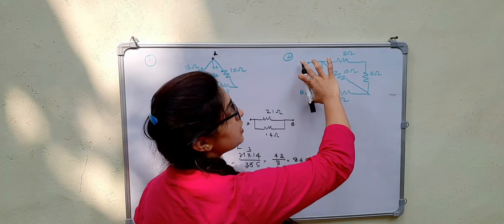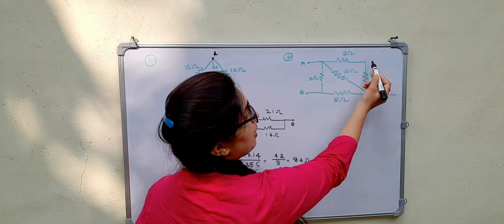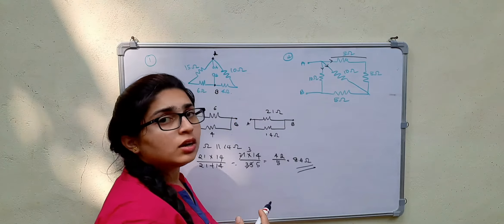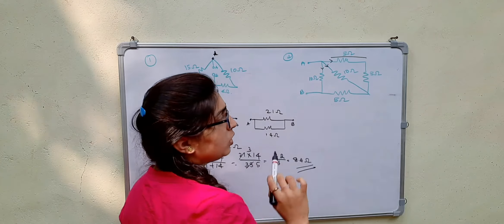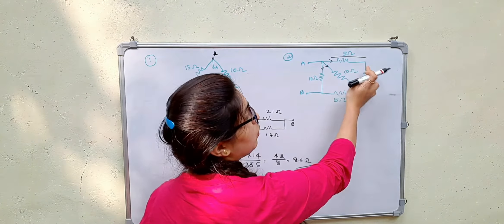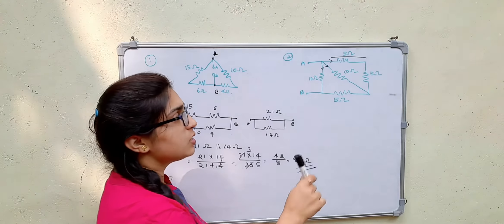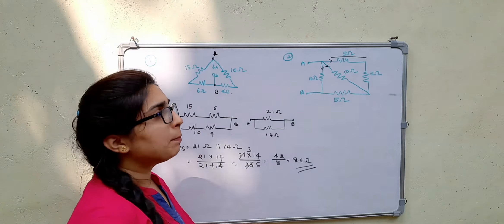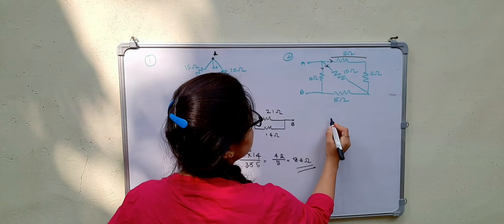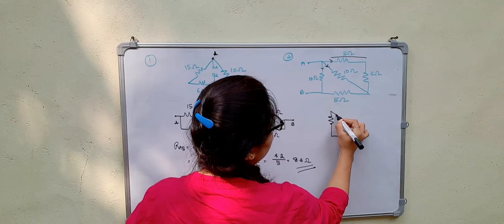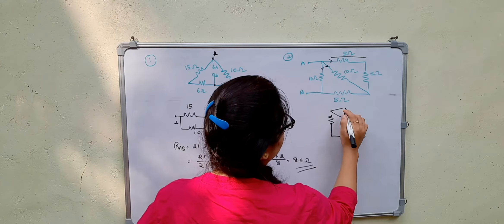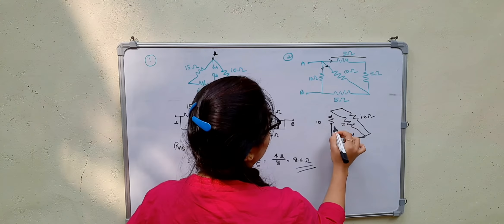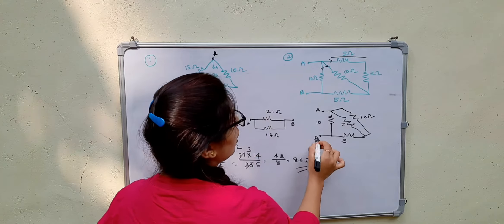Now let us consider the second figure with terminals A and B. The current can divide along paths, where 5 ohm and 5 ohm are in series giving 10 ohms. After the series combinations, we get: 10 ohm, 10 ohm, 10 ohm, and 5 ohms in the redrawn circuit.